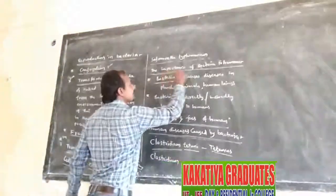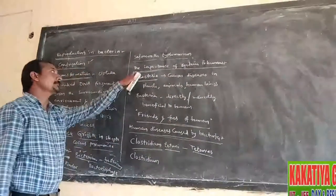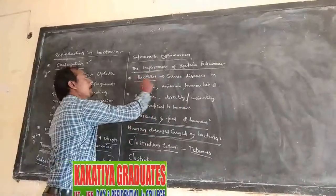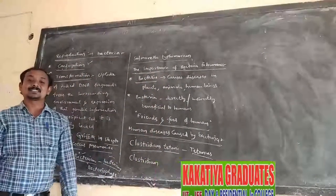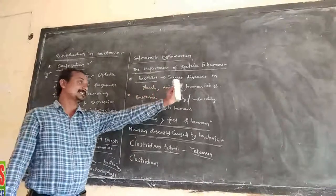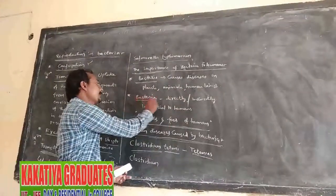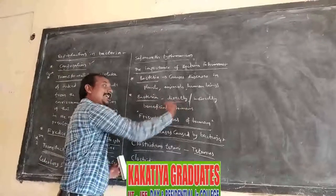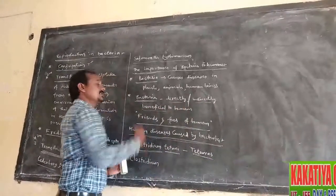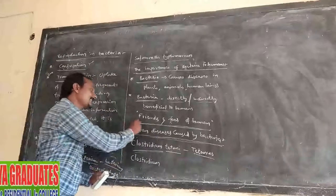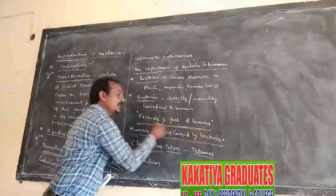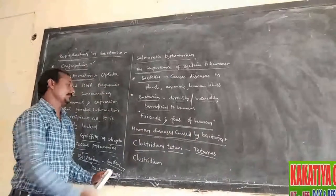Now I am discussing about the topic of the importance of bacteria to humans. Many bacteria cause diseases in plants, animals, and human beings, and some other bacteria are directly or indirectly beneficial to humans. Hence, the bacteria are also called as friends and foes of humans.